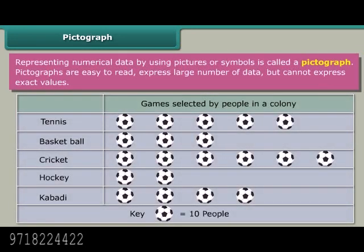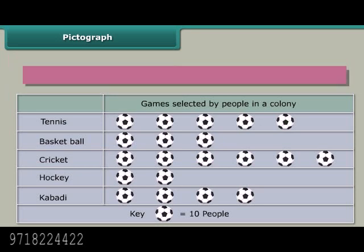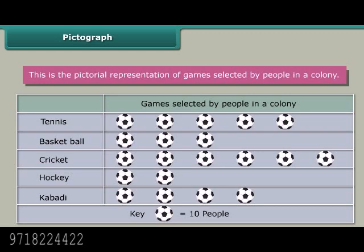Pictograph: Representing numerical data by using pictures or symbols is called a pictograph. Pictographs are easy to read, express large number of data, but cannot express exact values. This is the pictorial representation of games selected by people in a colony.